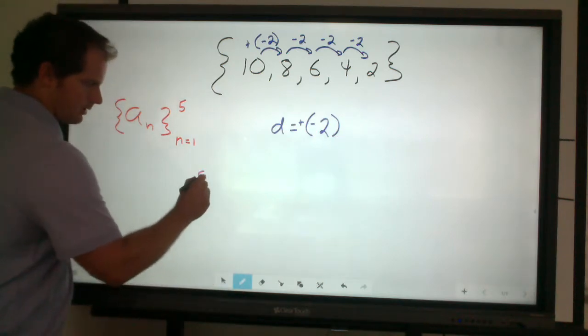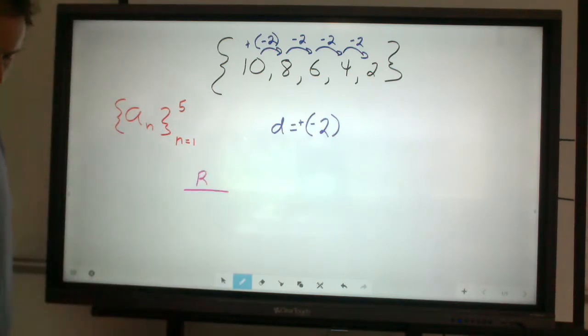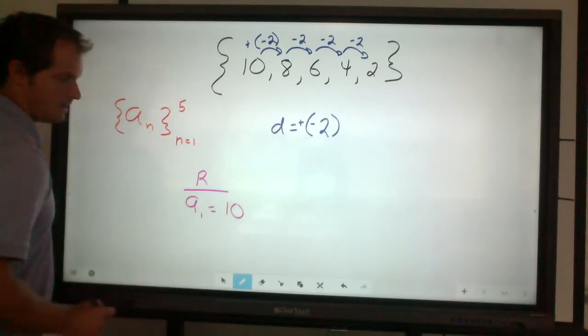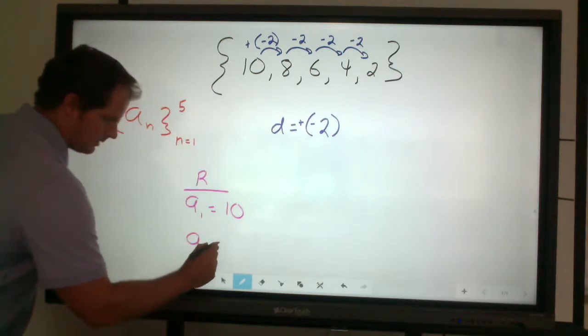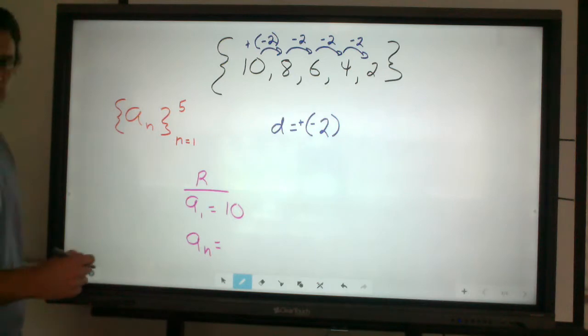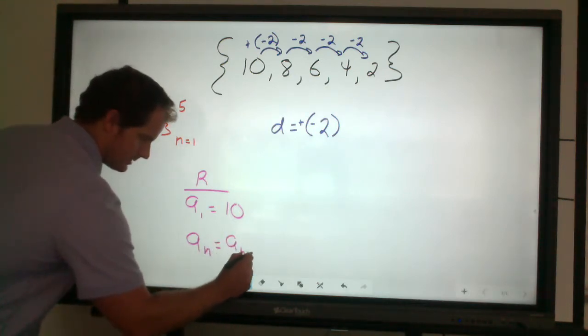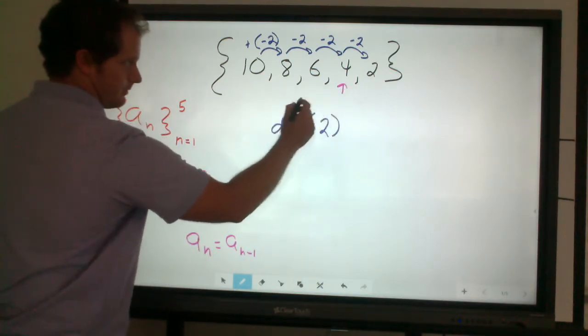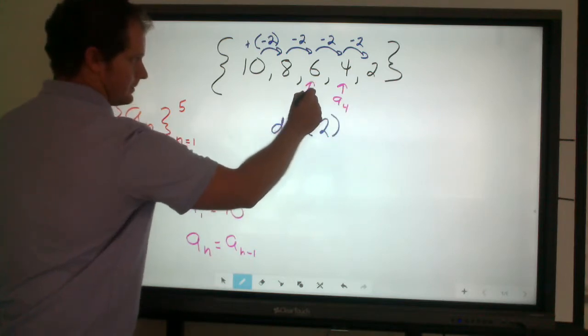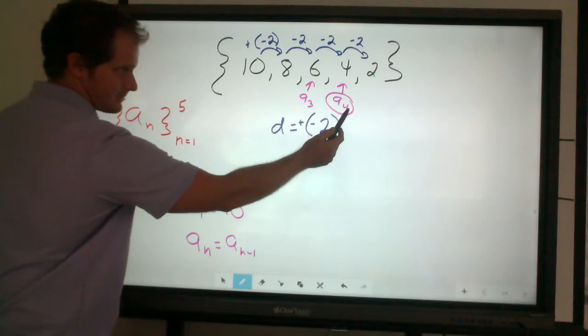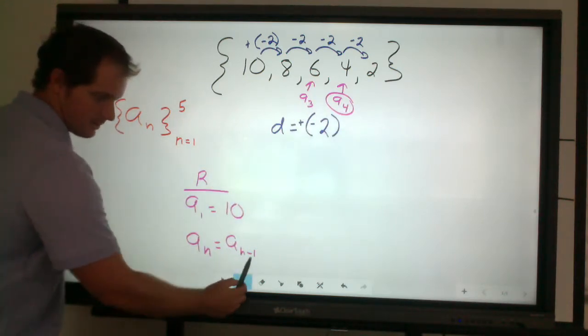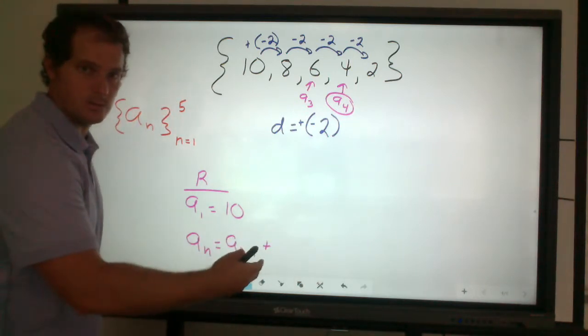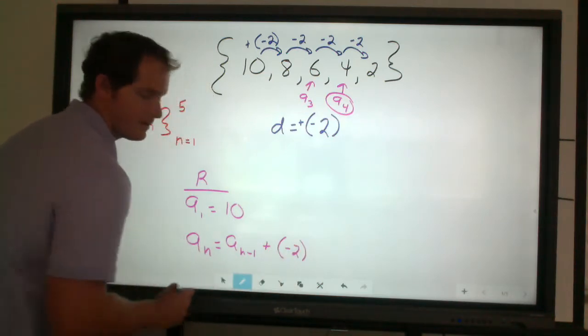Next thing we're going to do is look at the recursive way to write this formula. We start with the first term, so a sub one is 10. To find any term in this, what we do is we look at the previous term, which happens to be that sub n minus 1, just like if I happen to look at this term as being my fourth term, and this being my third term. To find the fourth term, I have to subtract one, so that four minus 1, which is the third term, plus the common difference. And again, you can write this as minus 2, or plus negative 2. Either one is acceptable.